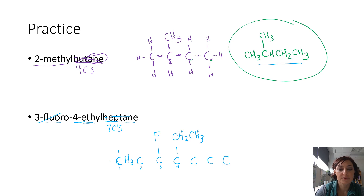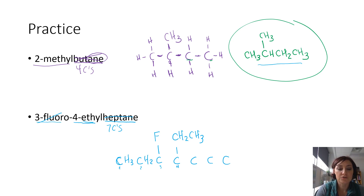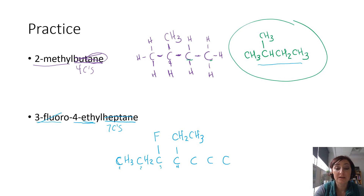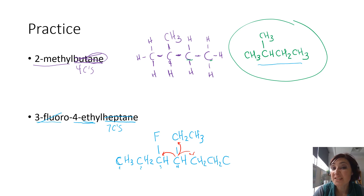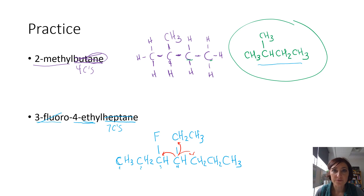The second carbon is attached to the first and third carbon so it only needs two hydrogens. The third carbon is attached to two carbons and a fluorine — that's six valence electrons — so it only needs one more hydrogen. The fourth carbon is attached to three carbons so it only needs a single hydrogen. Carbon five has attachments to two carbons so it needs two hydrogens, same with carbon six. Carbon seven is on the end with a single bond, so it needs three hydrogens to complete its octet. Practice drawing both the full and condensed structural formulas until you're comfortable writing condensed structural formulas directly.